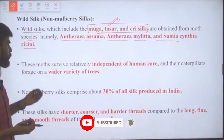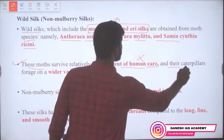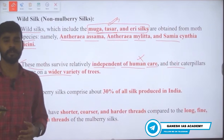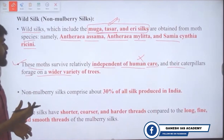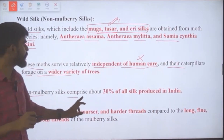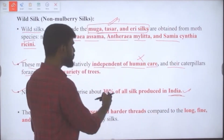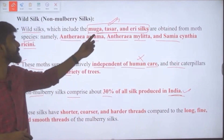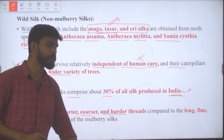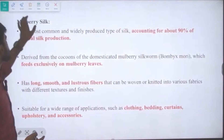Wild silk moths survive relatively independent of human care since they are not domesticated, and their caterpillars forage on a wider variety of trees — unlike the domesticated Bombyx mori, which feeds only on mulberry leaves. Non-mulberry silk comprises about 30% of all silk produced in India, with muga, tassar, and eri as the best examples. These silks have shorter, coarser, and harder threads compared to mulberry silk.